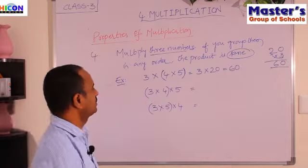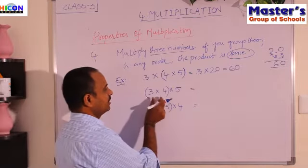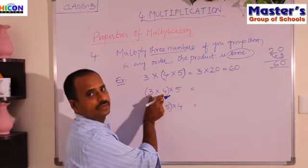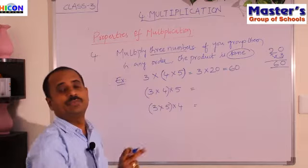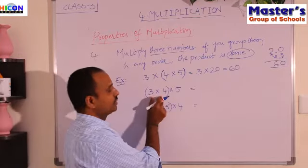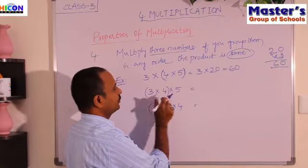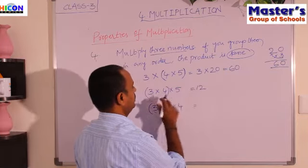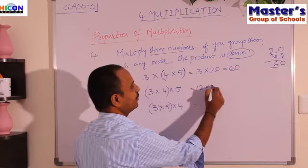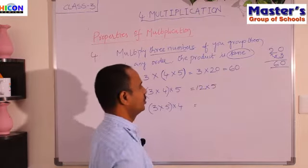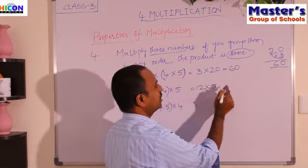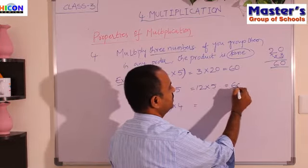Now see the answer for the second case. We have to multiply the numbers which are grouped first. Here 3 and 4 are grouped, so multiply 3 × 4 = 12. Write the third number, 5, as it is. Now 12 × 5 = 60.